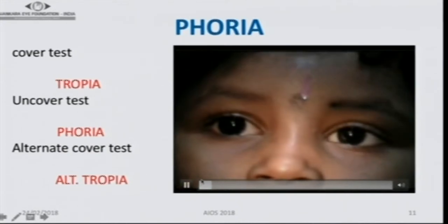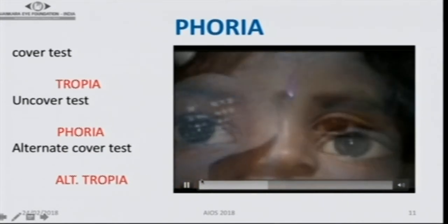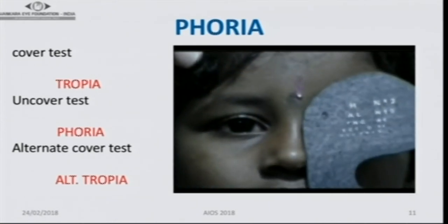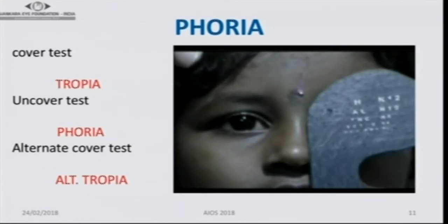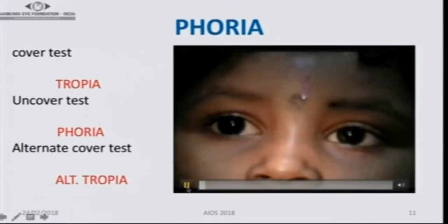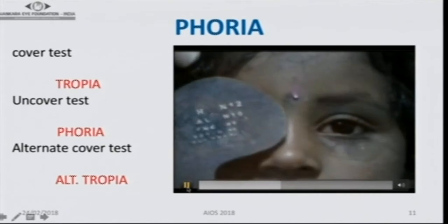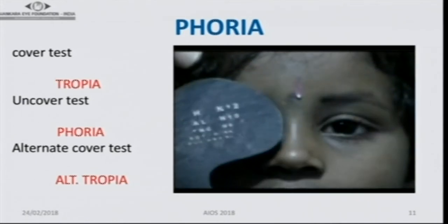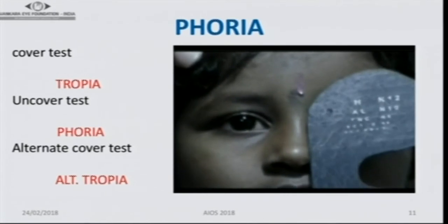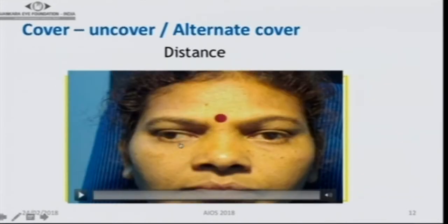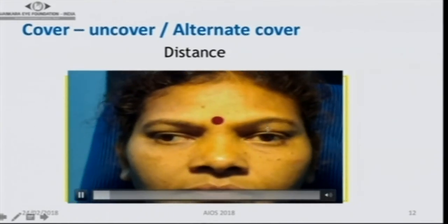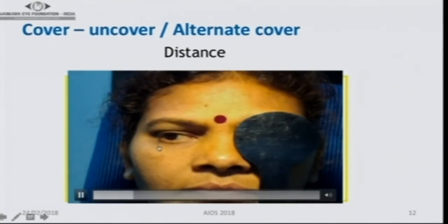In the cover-uncover test and alternate cover test, you can see subtle deviations. Many times you need to do the alternate cover test repeatedly to bring out a latent squint. When the eye moves out on repeated alternate cover testing, that is a phoria — no manifest deviation, but there is an underlying squint. When there is a manifest deviation such as the right eye deviating outward, you cover the left eye and see if the deviating eye takes up fixation, confirming that the vision is okay.